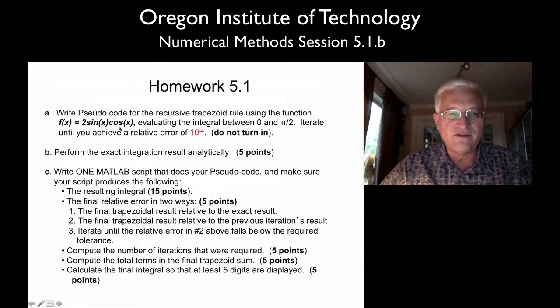Now this can be done in a variety of ways, through substitution or through some trig identity that might make it even easier. You're going to use 10 to the minus 4th as your criteria for limiting your relative error. So you want to continue your algorithm until you hit that precision in terms of relative error.